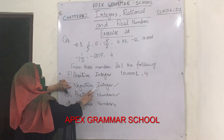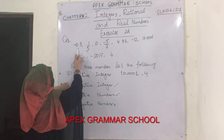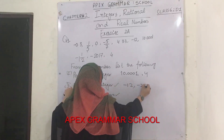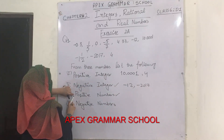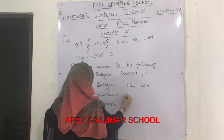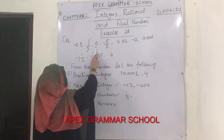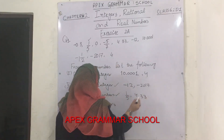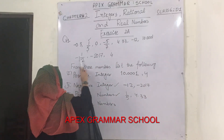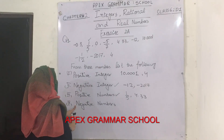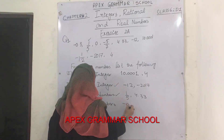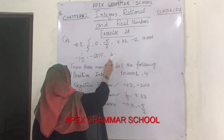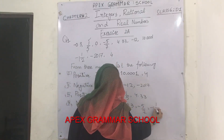In the second part, you are asked to find negative integers. A negative decimal is a negative number but not a negative integer. So your first negative integer is minus 12 and the second one is minus 2017. For positive numbers: 1 by 5 and 4.33 are positive numbers. 0 is not positive — it is a neutral value. For negative numbers: the first is minus 0.3, the second is minus 5 by 7, and also a mixed fraction minus 1 and 1 by 2.